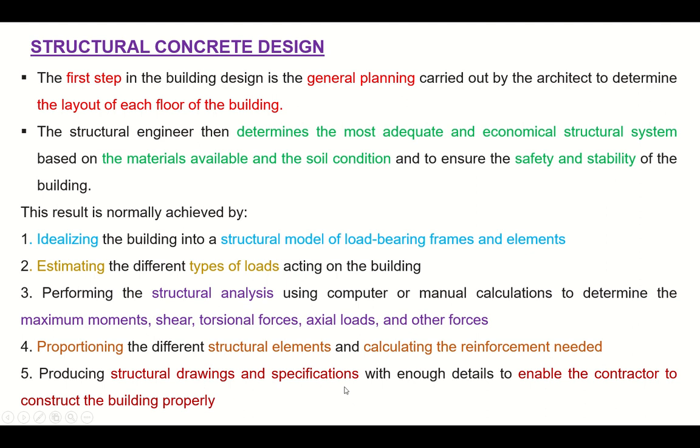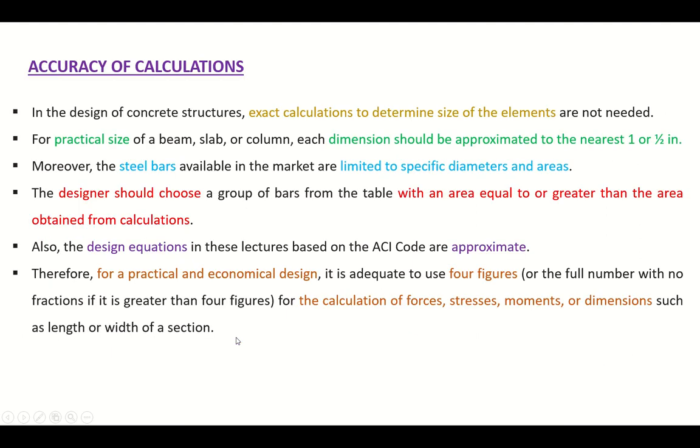As far as we are discussing the accuracy of calculations, exact calculations to determine the size of elements are not needed. For practical size of a beam, column, or slab, the dimension should be approximated to the nearest one or half of an inch. More about the steel bars available in the market are limited to specific diameters and areas, so the designer should choose a group of bars from the table with an area equal to or greater than the area obtained from calculations. Also, the design equations in these lectures will be based on the ACI code and are approximate. Therefore, for a practical and economical design, it is adequate to use four figures.